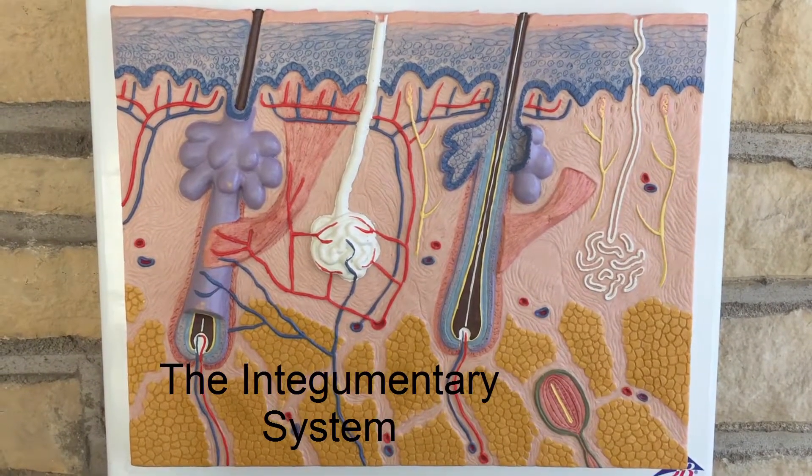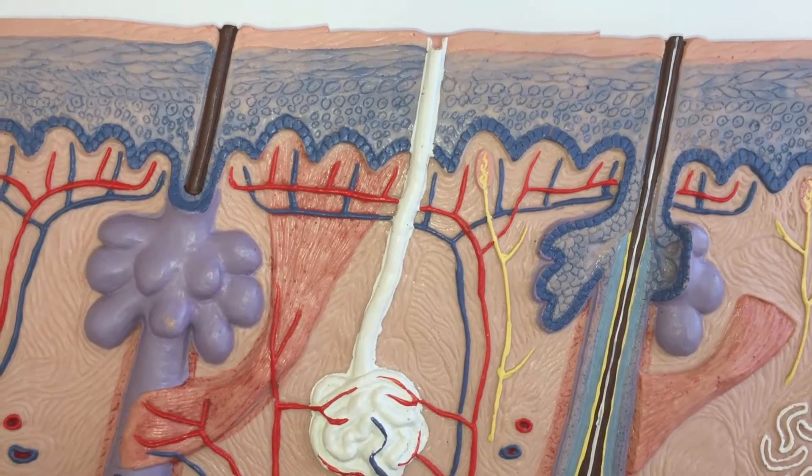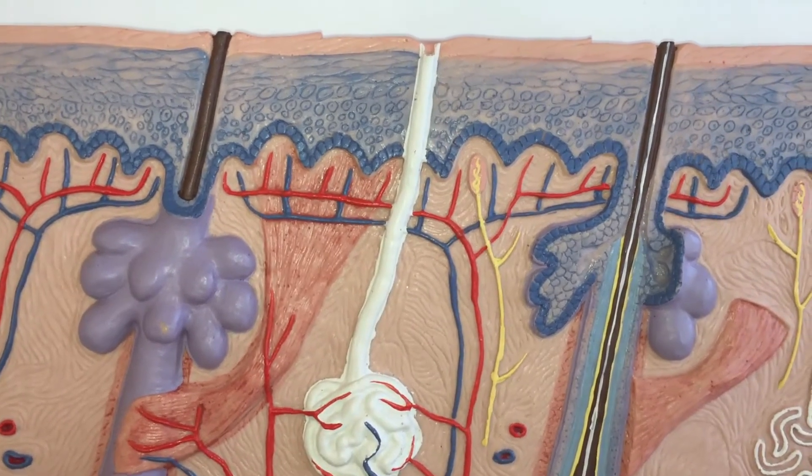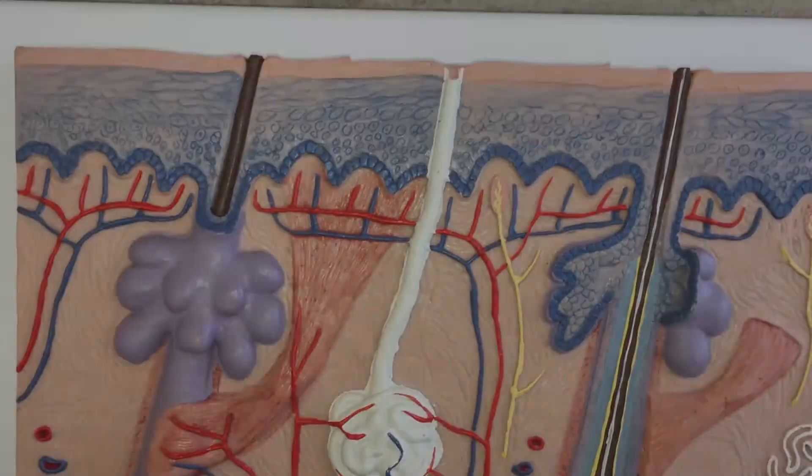In this lab, we're going to look at the integumentary system model. The layers of the integumentary system are the epidermis, which is made of stratified squamous epithelium; the dermis, which is predominantly dense irregular collagenous connective tissue; and the hypodermis, which is made up of predominantly adipose tissue.